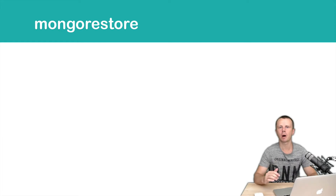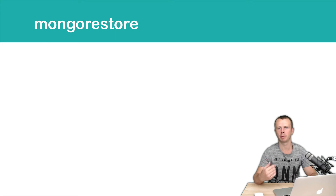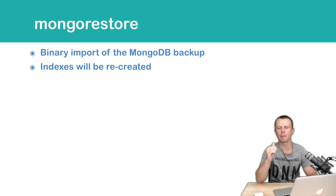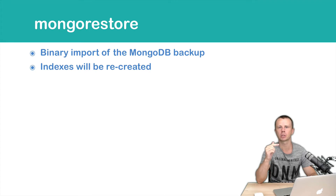In this lesson we will talk about the Mongo Restore utility. This utility restores data from the MongoDB backup that was created using the MongoDump utility. Remember that MongoDump creates a dump of the MongoDB database, including MongoDB collections and information about indexes.